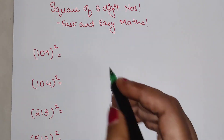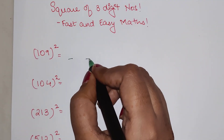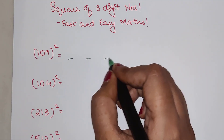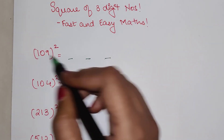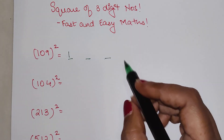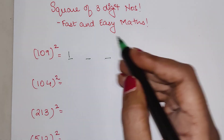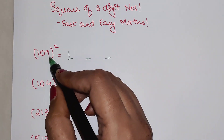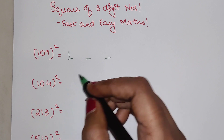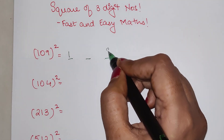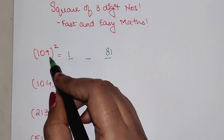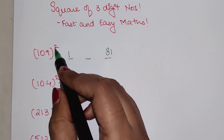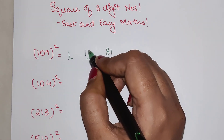All you have to remember is your answer is divided into three parts. The first part is the square of the first digit, which is 1, so that's 1. The last part is the square of the last digit — in this case we have 09, so we take just 9, and the square of 9 is 81. For the middle part, we do 1 into 9, which gives 9, multiplied by 2, giving 18.